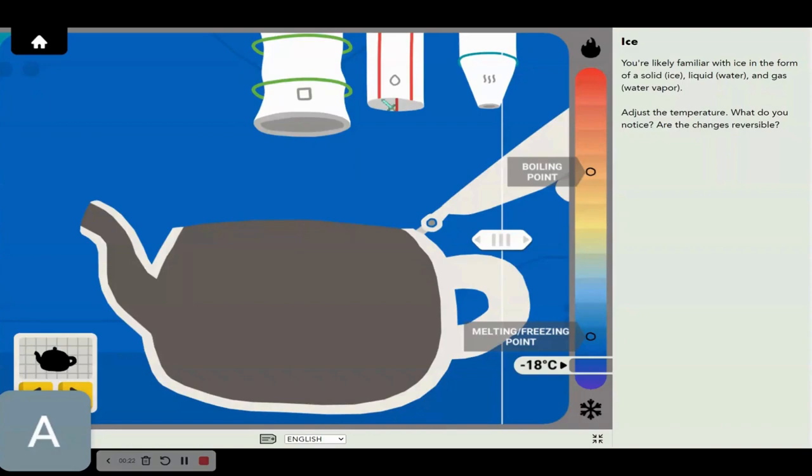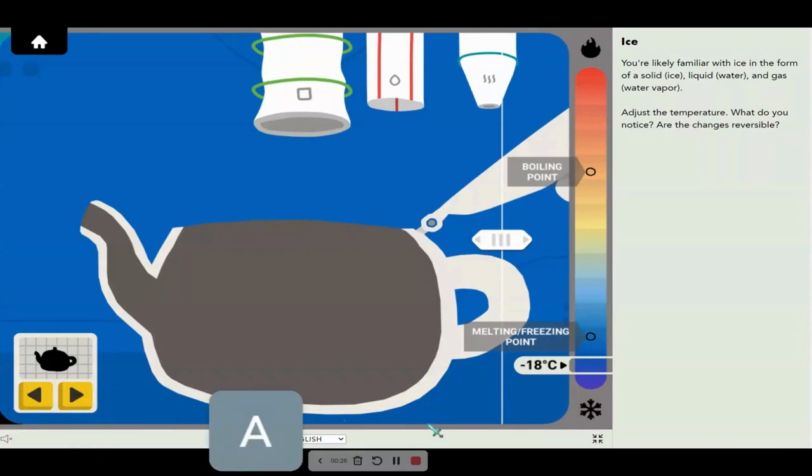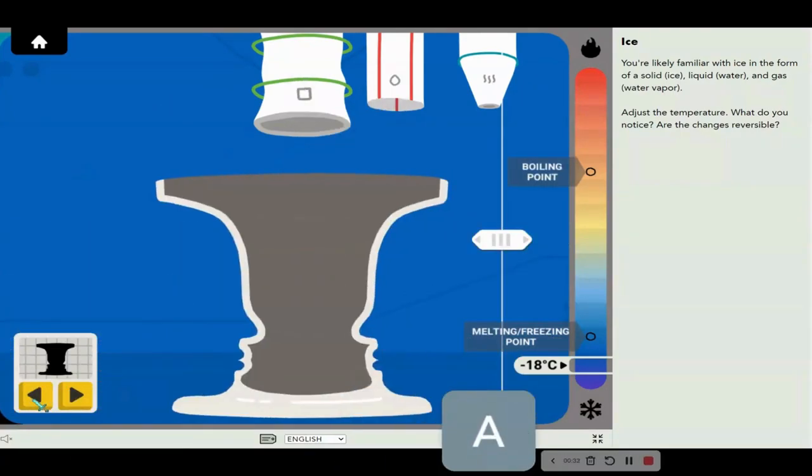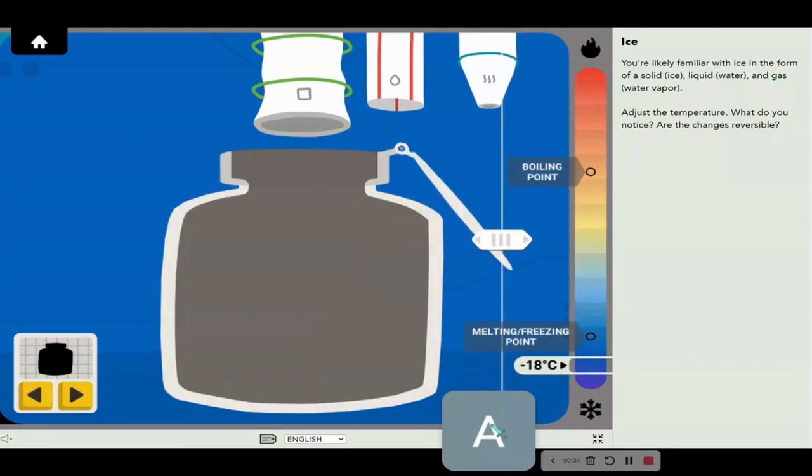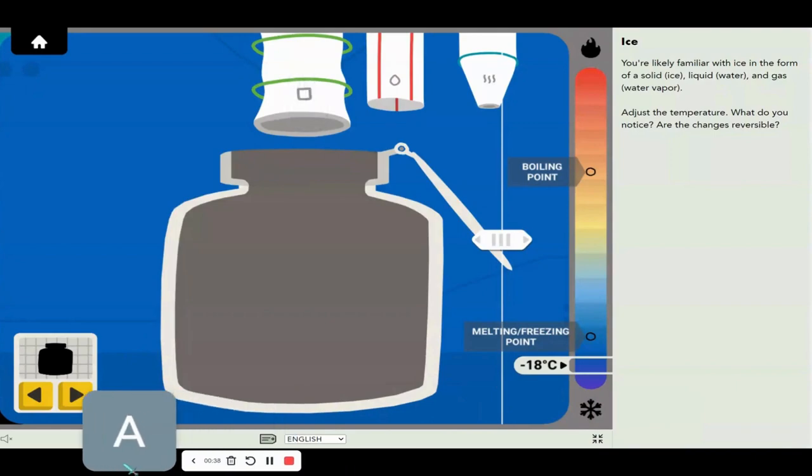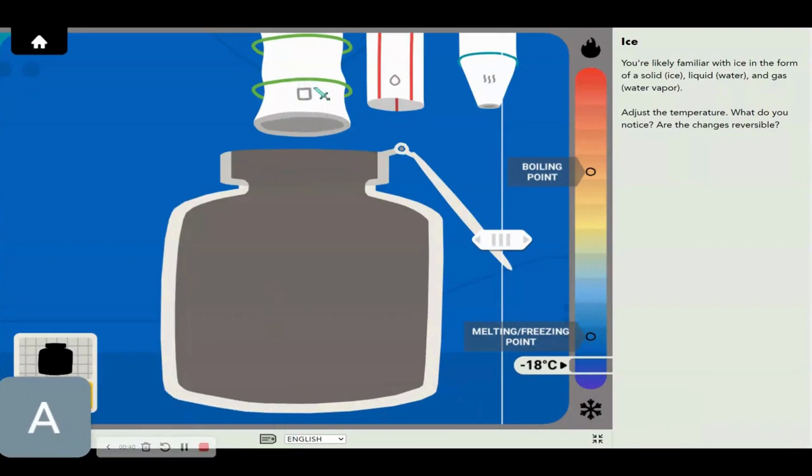You can already see it: ice, water, and vapor. What is this? Well, it's a state of matter course. Cool, let's choose. Yeah, this seems good. Anyways, let's get on with experimenting.